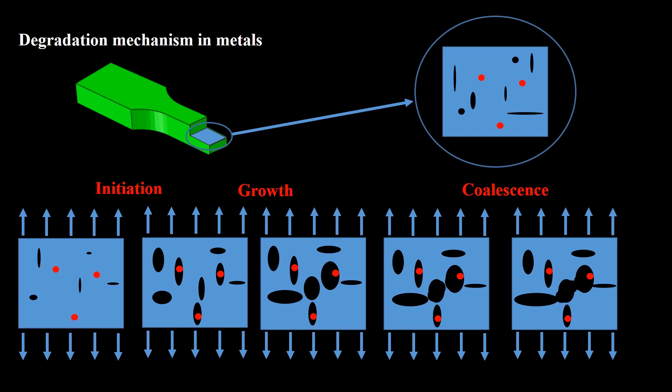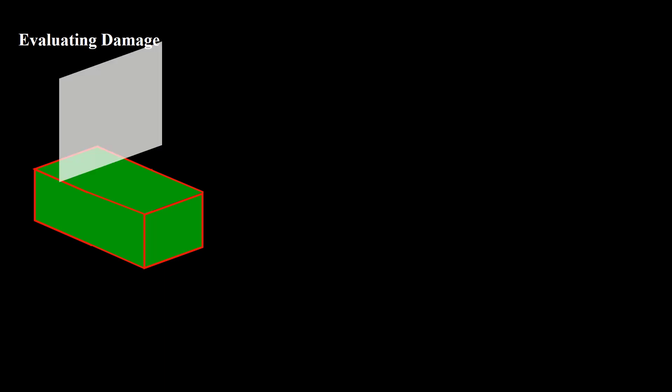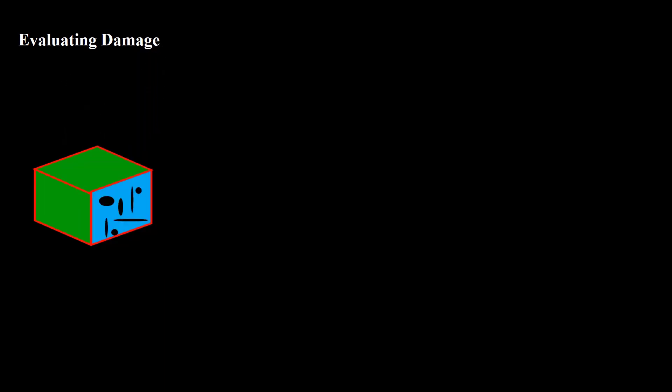Now we understand the mechanisms and stages of damage initiation and growth in a metal. But how can we evaluate and predict damage in a metal? Imagine a part during deformation. Assume we cut the part and investigate its cross-section. If the material was perfect, we had a part with cross-sectional area of A₀. We can calculate the applied stress by the force in this area.